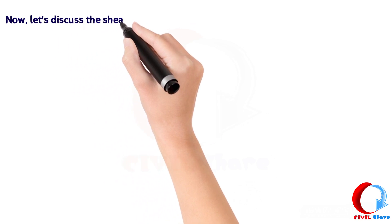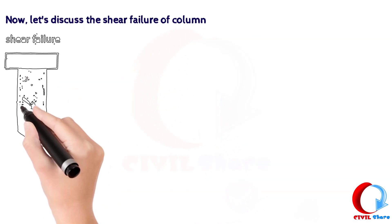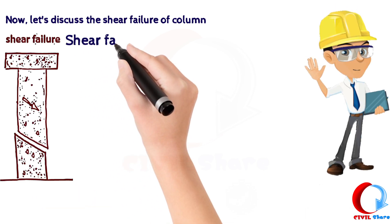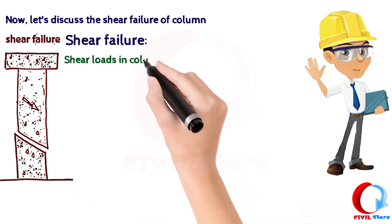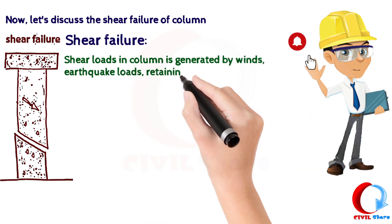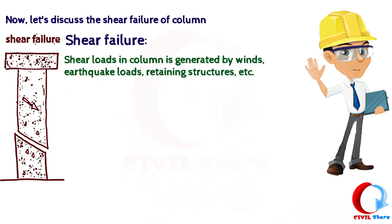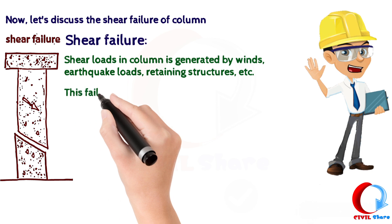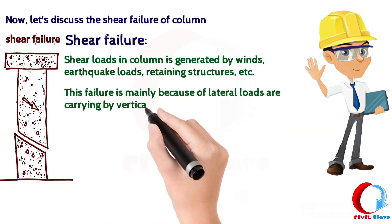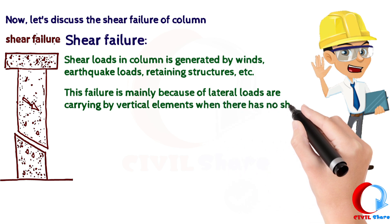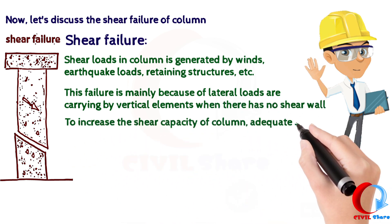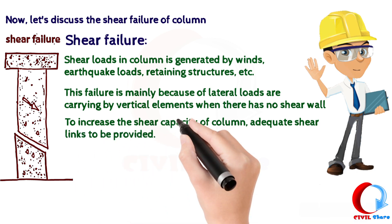Now let's discuss the shear failure of a column. Shear loads in a column are generated by winds, earthquake loads, retaining structures, etc. This failure is mainly because lateral loads are carried by vertical elements when there is no shear wall. To increase the shear capacity of a column, adequate shear links need to be provided, as shown below.